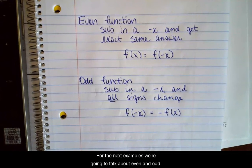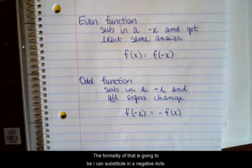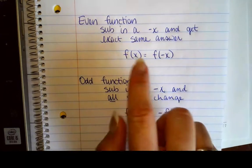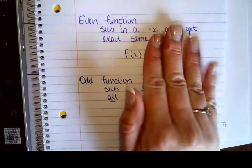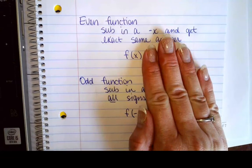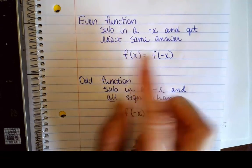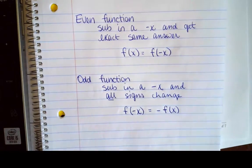For the next examples, we're going to talk about even and odd functions. If I have an even function, the formality is that I can substitute in a negative x and get the exact same answer as what I started with. So if I have a regular x, it gives me f of x. If I change the sign on x, it will still give me f of x — it won't change the signs.